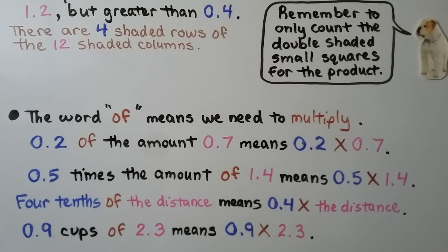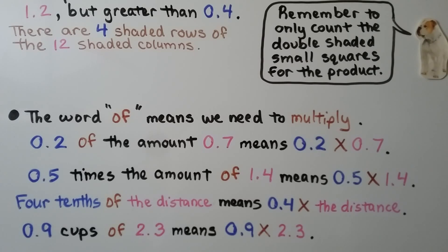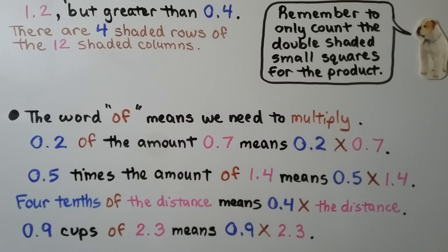The word 'of' means we need to multiply. If you see the word 'of' in a word problem, you probably need to multiply. For example: 2 tenths of the amount 7 tenths means 2 tenths times 7 tenths; 5 tenths times the amount of 1 and 4 tenths means 5 tenths times 1 and 4 tenths; 4 tenths of the distance means 4 tenths times the distance; and 9 tenths cups of 2 and 3 tenths means 9 tenths times 2 and 3 tenths.